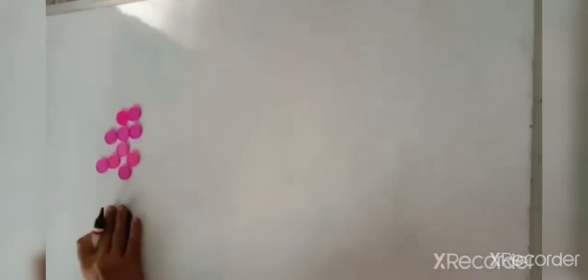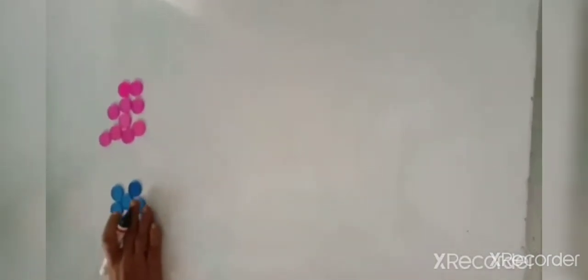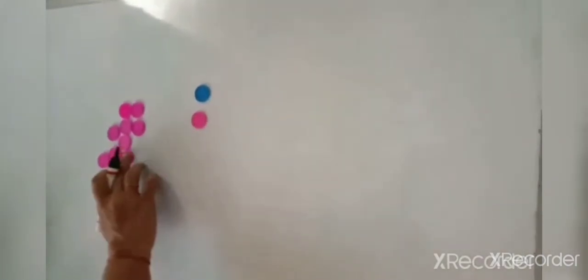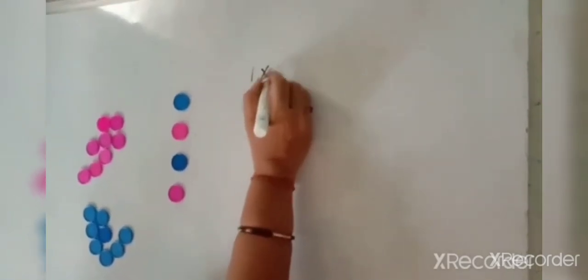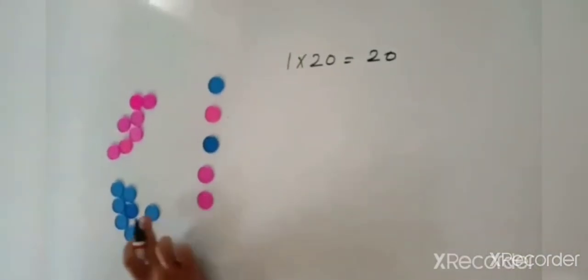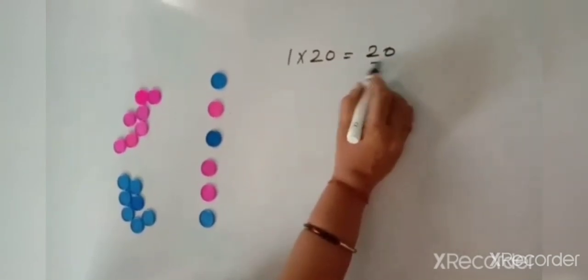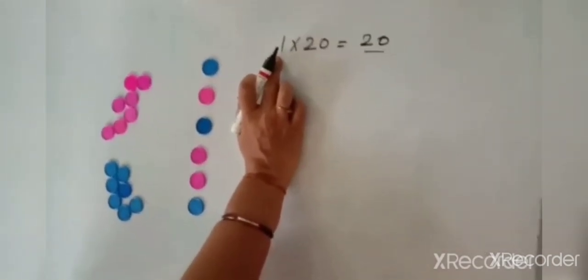Now before we start with our new chapter, let us do one activity. I have got 10 new coins and 10 pink coins, so in all I have got 20 coins. If I arrange one coin in each row, I will be getting 20 rows. That means 1 into 20 is equal to 20, so the number 20 is completely divisible by the number 1.